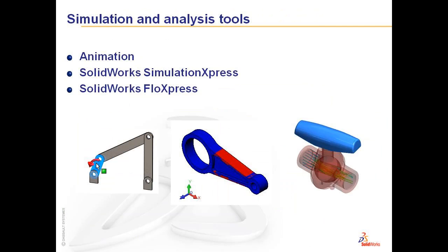All SOLIDWORKS products, including the Student Design Kit, include animation, SOLIDWORKS Simulation Express, and SOLIDWORKS Flow Express. Simulation Express and Flow Express provide simple analysis on a part. By entering a linear elastic material, forces and boundary conditions, and restraints, and performing a simple analysis, students can get a good first pass using Simulation Express or Flow Express products.